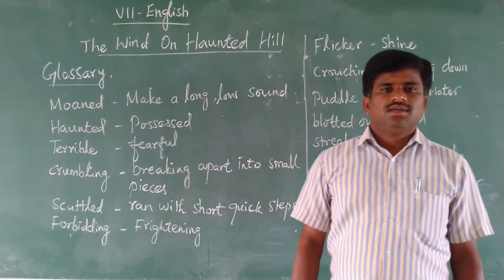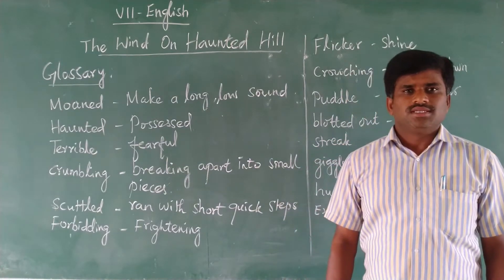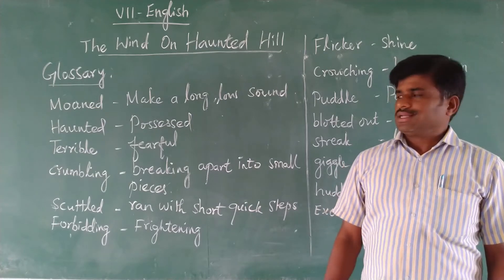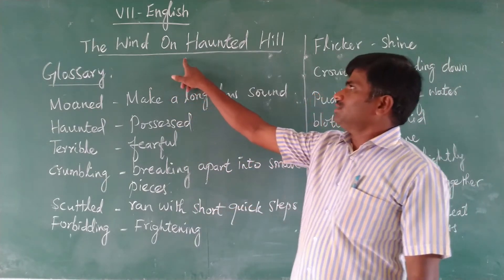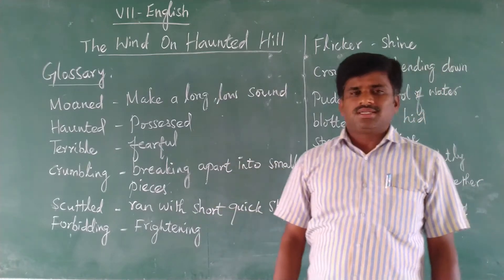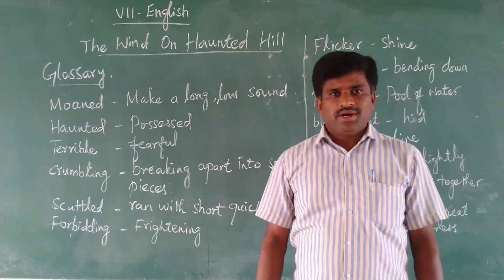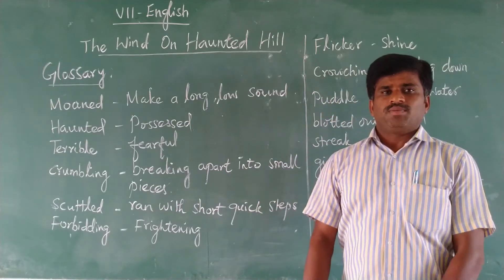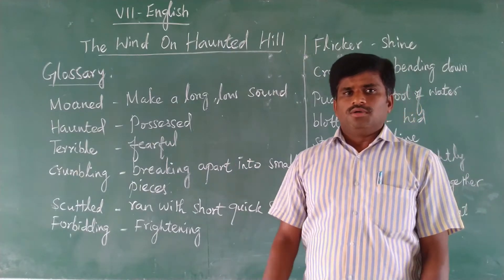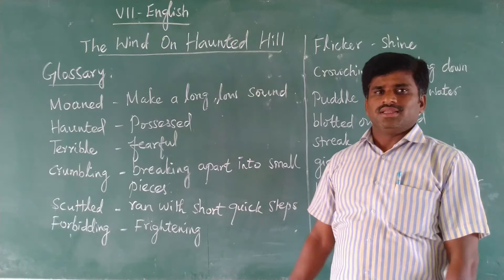Hello students. In this class we are going to see the 7th Standard Prose lesson. The name of the lesson is 'The Wind on Under Hill.' This lesson contains 3 sections. Before going to the explanation of each exercise — that is Section 1, Section 2, and Section 3 — we should know what glossary is given in the lesson.